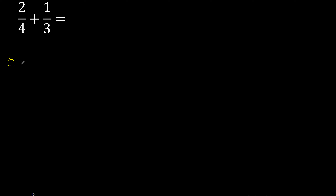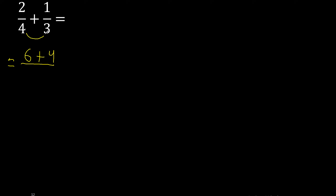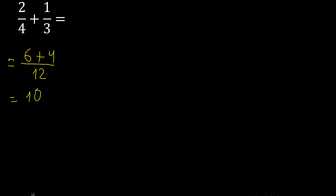First multiply like this: 3 multiplied by 2 is 6, 4 multiplied by 1 is 4, 4 multiplied by 3 is 12. That gives us 10 over 12.